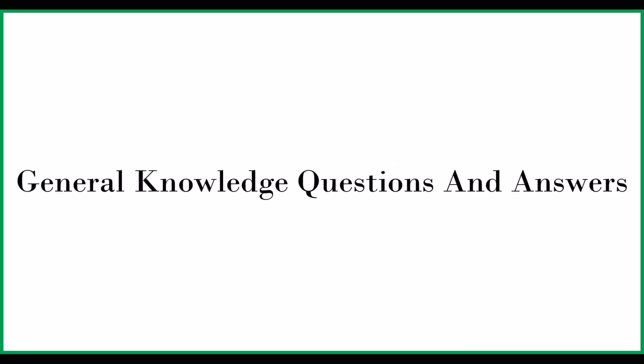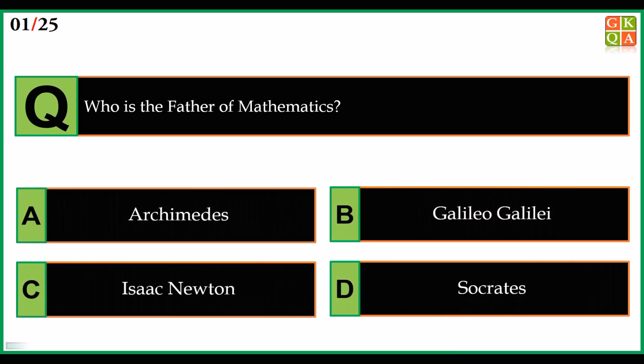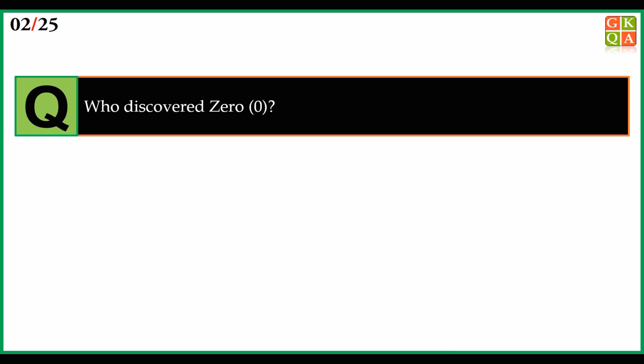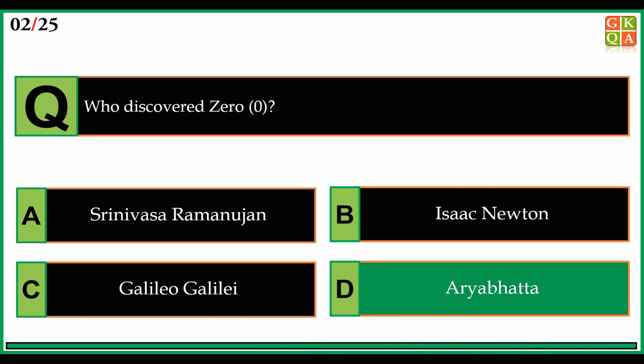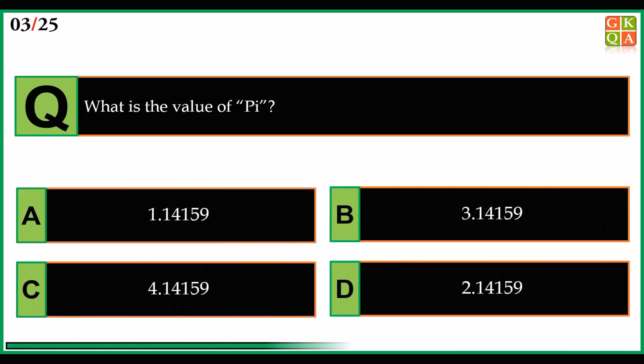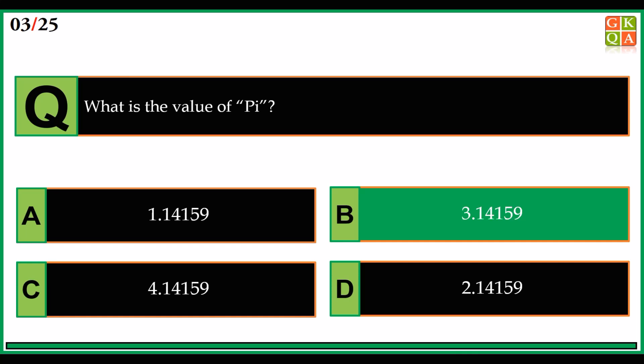General knowledge questions and answers. Who is the father of mathematics? Answer: option A, Archimedes. Who discovered zero? Answer: option D, Aryabhatta. What is the value of pi? Answer: option B, 3.14159.